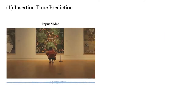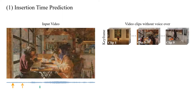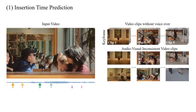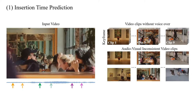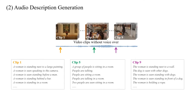Our system consists of three stages. First, with an input video, our system determines when to insert an audio description. This is achieved by video keyframe extraction and audio-visual consistency analysis. For each inconsistent video clip, leveraging dense video captioning algorithms, our audio description generation module figures out what activities to describe and generates several results.